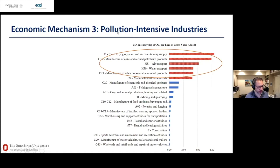The third mechanism we test — pollution-intensive industries — doesn't yield interesting results. These are industries that, based on EU statistics, generate the highest emissions per unit of revenue or assets. The first six industries account for most of the pollution compared to others.